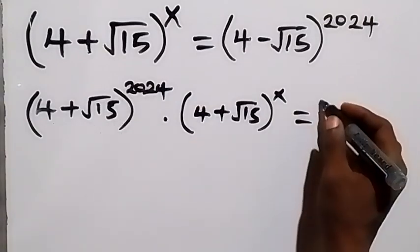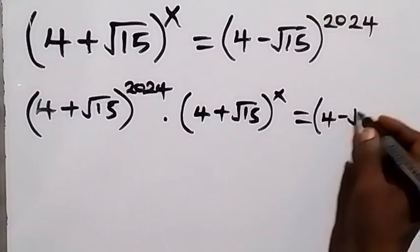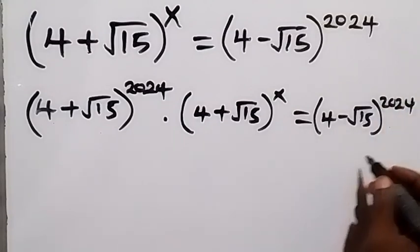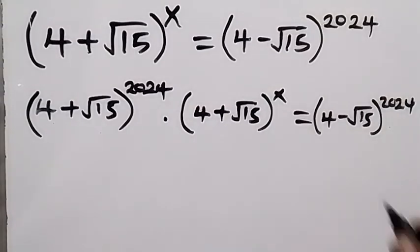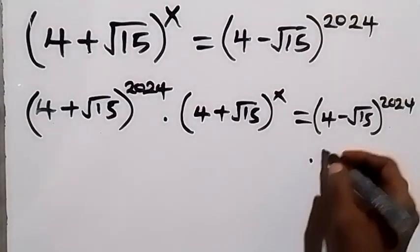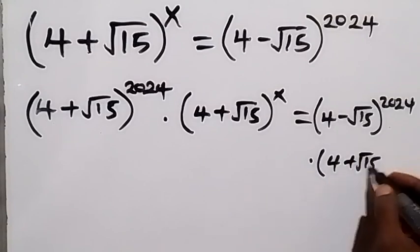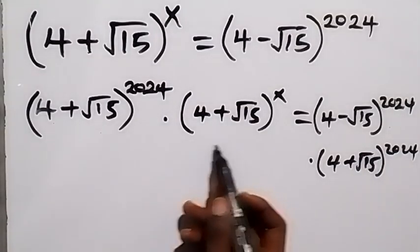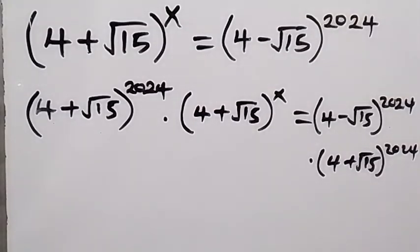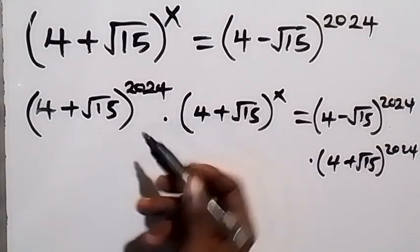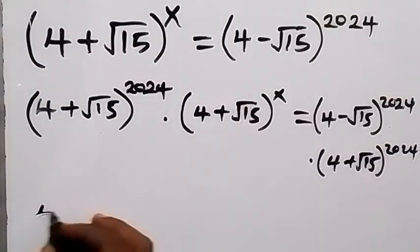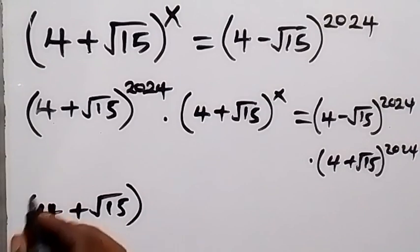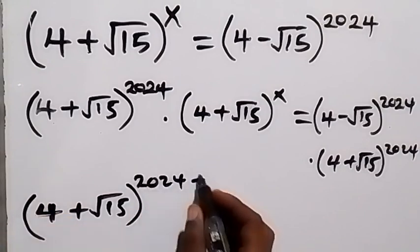So this will become 4 minus root 15 raised to power 2024, then also multiplied by 4 plus root 15 raised to power 2024. From here, on this side we have the same base — from the law of indices, when the bases are the same we can take one base and add the powers. So we have 4 plus root 15 raised to power 2024 plus x.